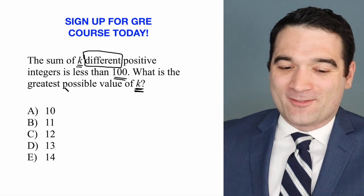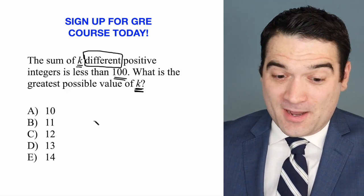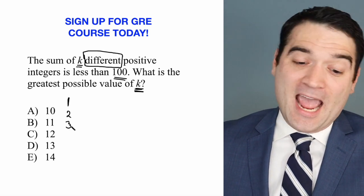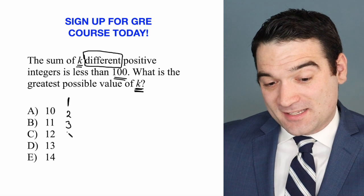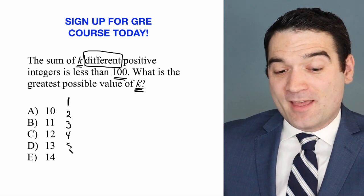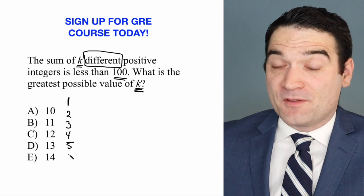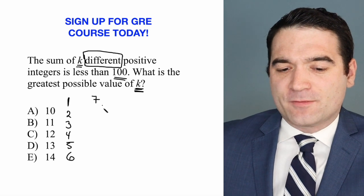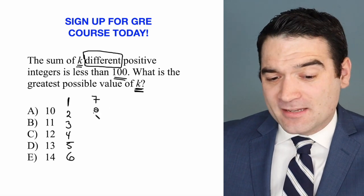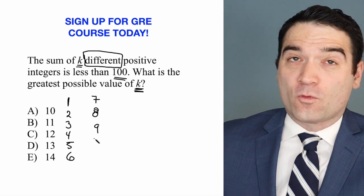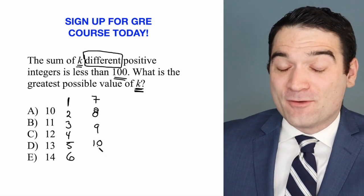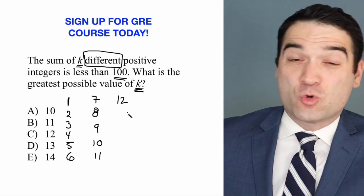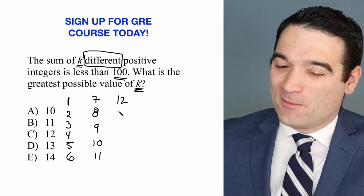I can't just say 1, 1, 1, 1... I have to start at the very bottom, which is 1 — that's the smallest positive integer — and then add 2, that gets me 3. Then add 3, that gets me 6. Then add 4, that gets me 10. Then add 5, that gives me 15. Then add 6, that's 21. You can do this on your calculator, of course. Then add 7 for 28, add 8 for 36, add 9 for 45, add 10 for 55. Add 11 for 66. Add 12 for 78, almost there.